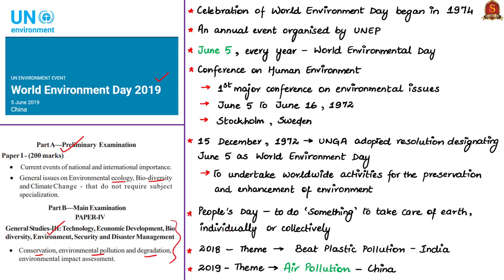The celebration of World Environment Day has begun in the year 1974. It is an annual event organized by the United Nations Environment Programme every year on June 5. Whenever we talk about development of international environmental politics we start from the year 1972, because the first major conference on environmental issues was held in that year with the support of the United Nations. This conference is called the Conference on the Human Environment, which began on June 5 of 1972 and concluded on June 16, 1972.